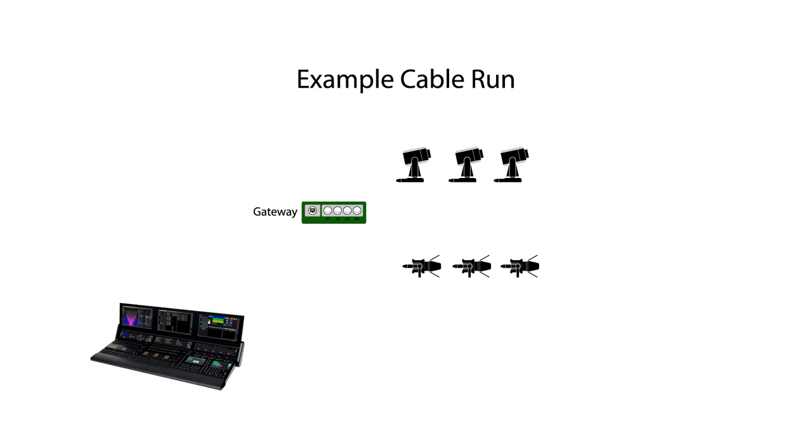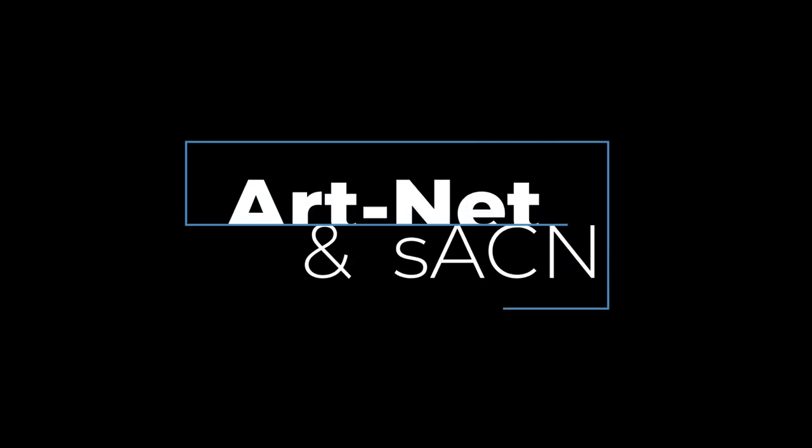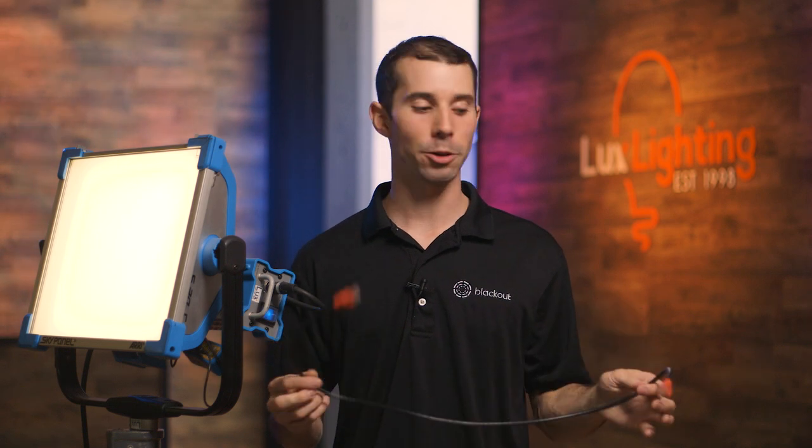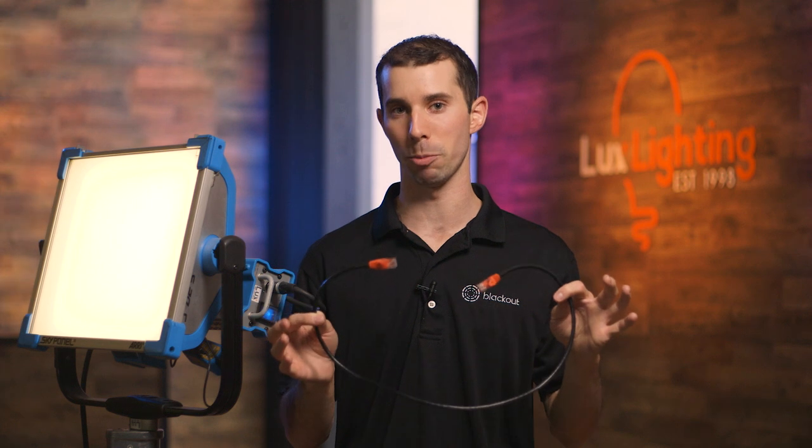That's why we run Ethernet from the console to that first main point. Simply put, SACN and Artnet are lighting protocols like DMX, but they go over Ethernet instead of XLR. Basically, they allow you to transmit multiple universes of DMX over Ethernet, and depending on the bandwidth of your cable, they allow you to transmit hundreds or even thousands of universes across one cable.